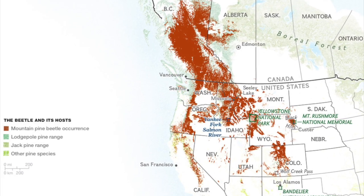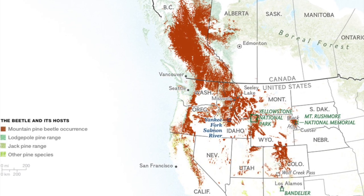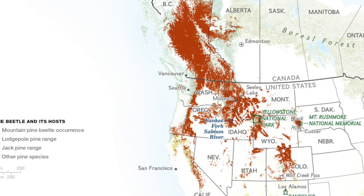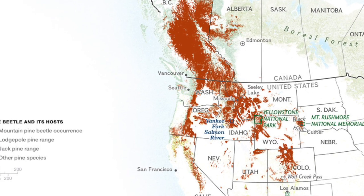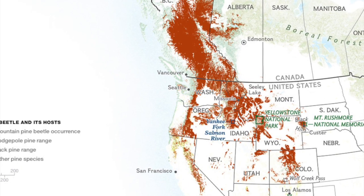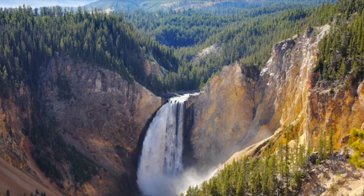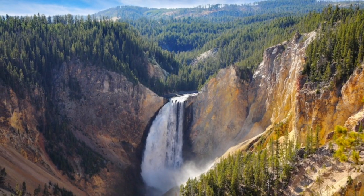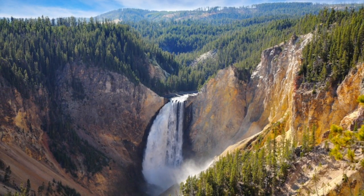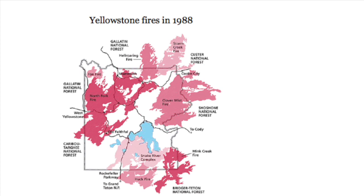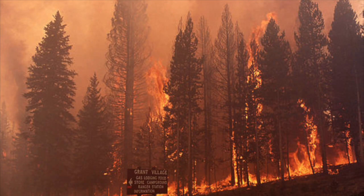Since 1990, more than 60 million acres of forest from northern New Mexico to British Columbia have been destroyed by the beetles. Scientists in Wyoming tested the historical evidence of pine beetles in Yellowstone National Park, 25 years before the 1988 fires, in order to observe the effect of beetles before those fires.